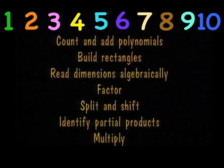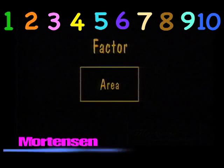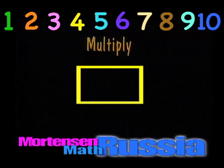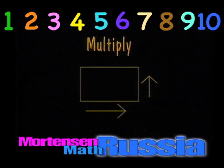When we learned to factor, we were given the area of a rectangle and found the over and up dimensions. When we learned to multiply, we were given two dimensions of a rectangle and found the area.